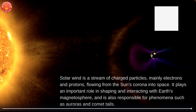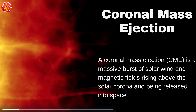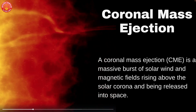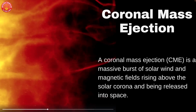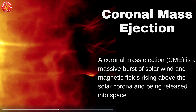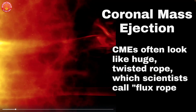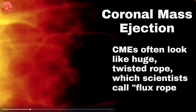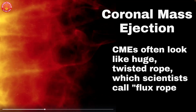Let us understand one more concept: coronal mass ejection. Coronal mass ejection is a massive burst of solar wind and magnetic fields rising above the solar corona and being released into space. CMEs often look like a huge twisted rope, as seen in the graphics, and are also called flux ropes by scientists.